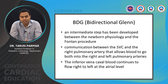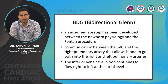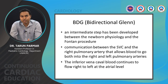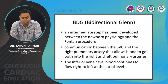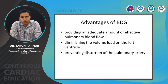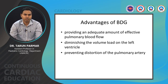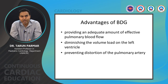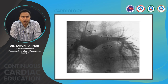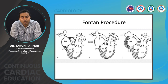The bidirectional Glenn (BDG) shunt is the usual intermediate procedure before complete Fontan completion in tricuspid atresia. It consists of an anastomosis between the SVC and the right pulmonary artery, allowing IVC blood to be directed to the pulmonary artery at the Fontan stage. The advantage of BDG over primary Fontan surgery is that it provides adequate effective pulmonary blood flow, diminishes the volume load on the left ventricle, and prevents distortion of the pulmonary arteries. This is demonstrated angiographically in the BDG/Glenn shunt images.